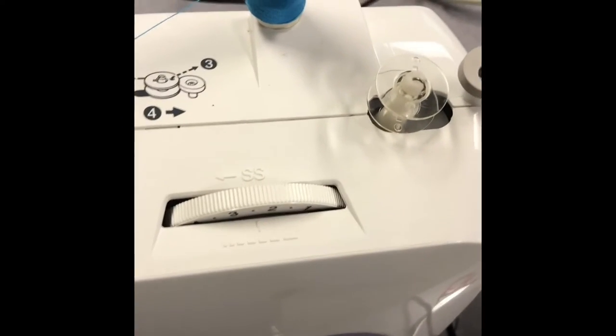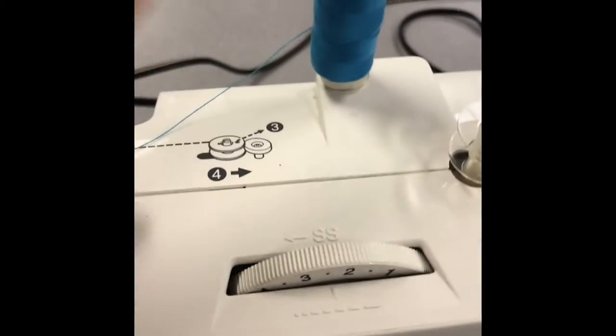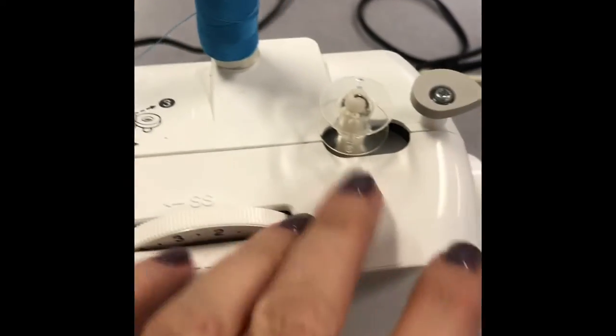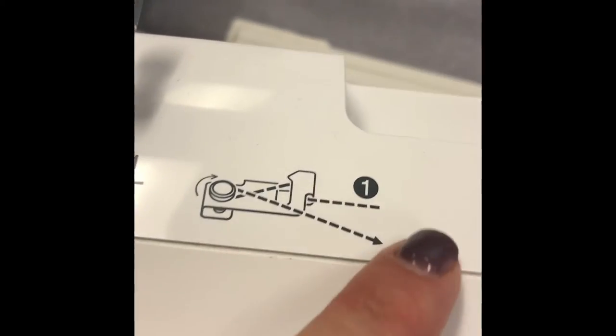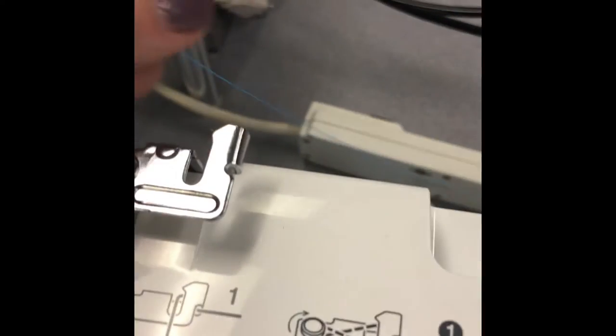We're going to figure out how to wind a bobbin and thread it. We have our thread on the spool pin and a clear bobbin on the bobbin holder. The instructions tell you to go under one, loop it around, and go back the other way. So we're going to go under, and it's a lot easier to do with two hands than one.